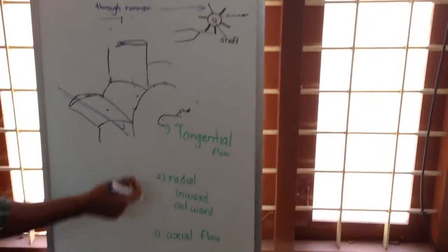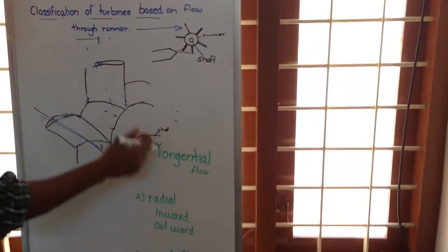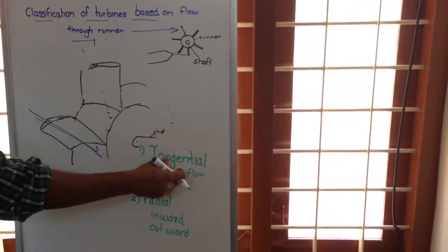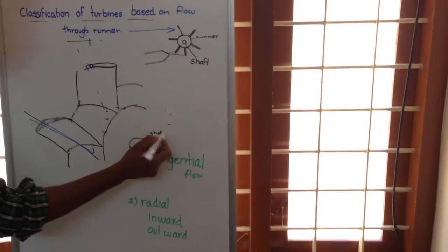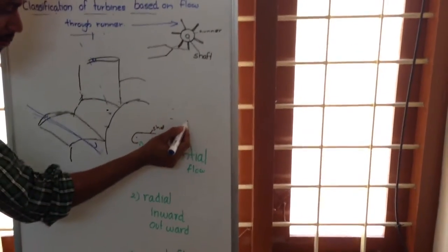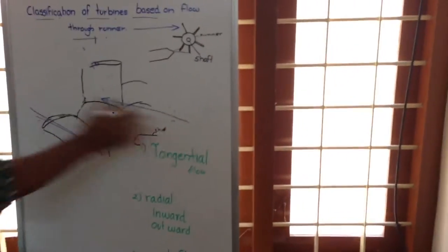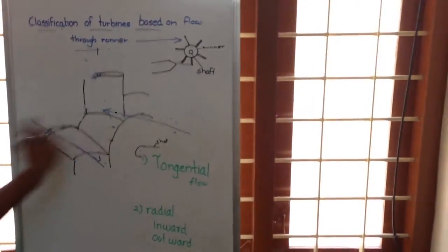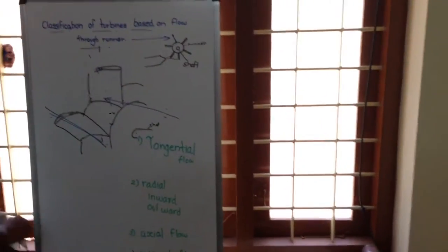In axial flow turbines, the axis of the turbine is actually the shaft of the turbine. If water is flowing parallel to the shaft, then we will call it axial flow turbines.